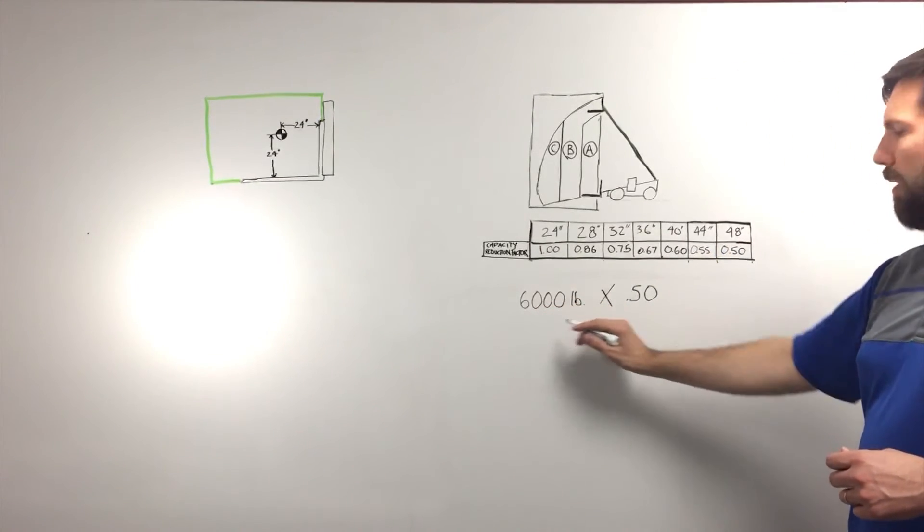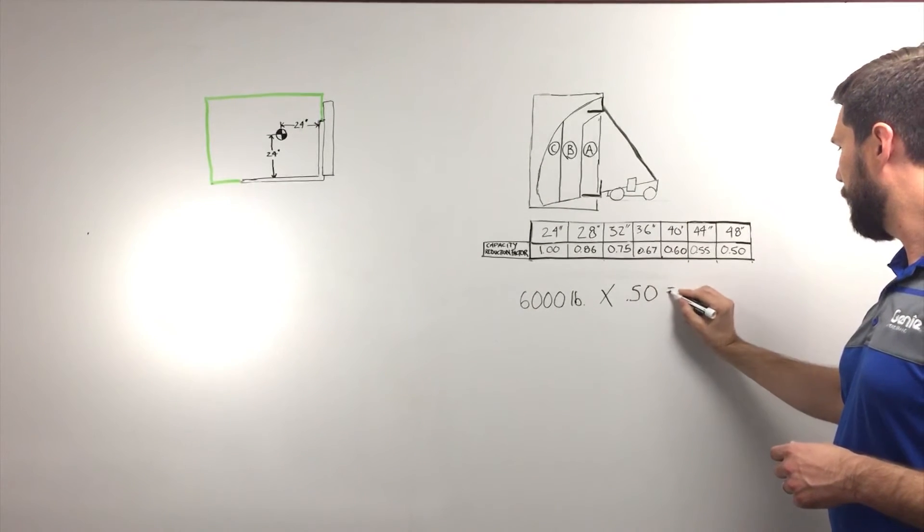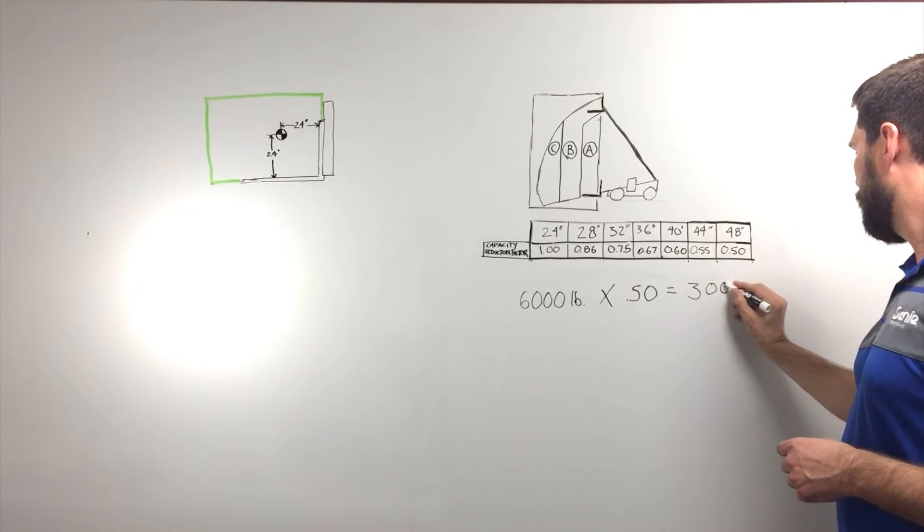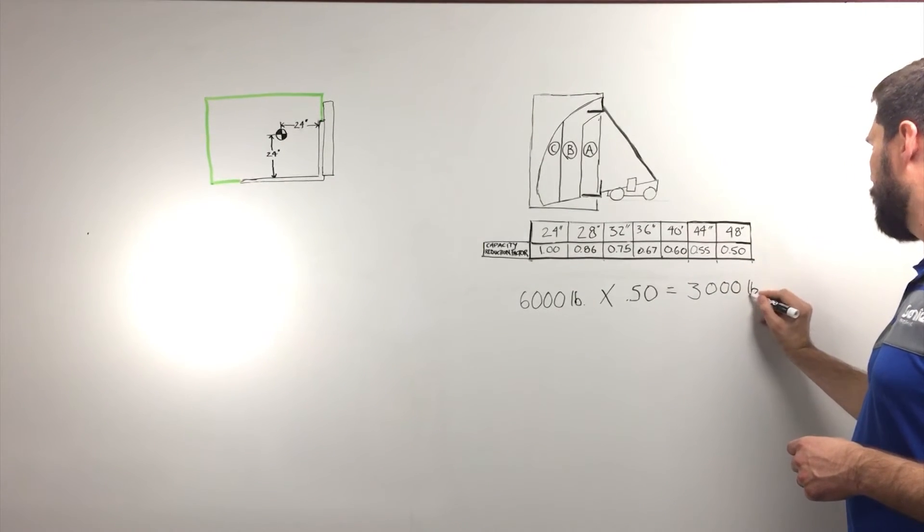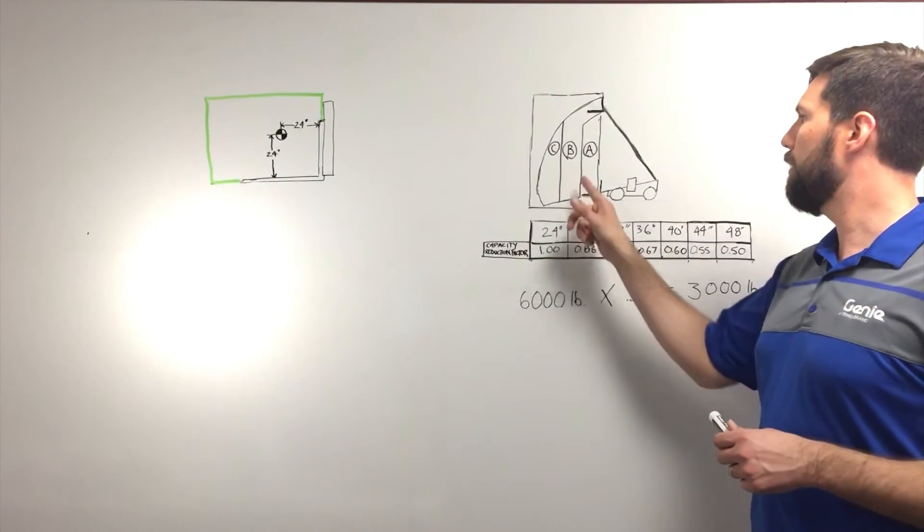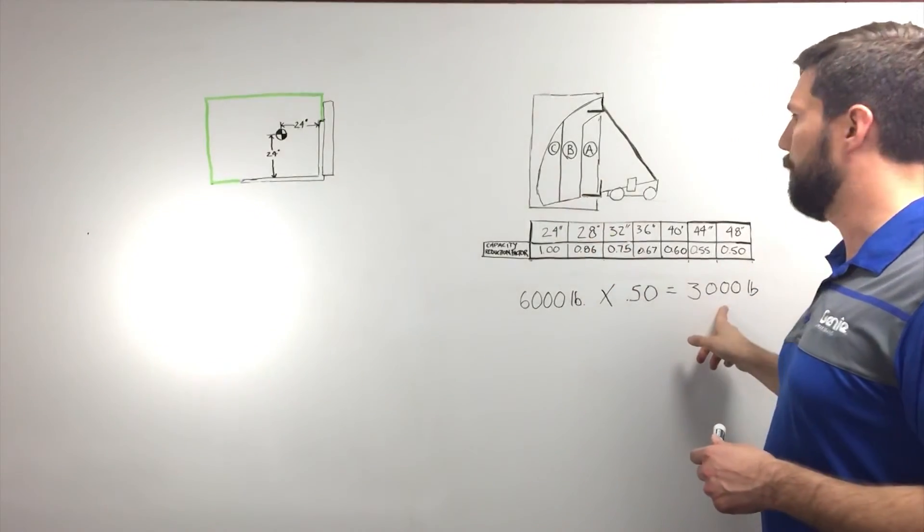So 6,000 pounds times 0.50 equals 3,000 pounds. So I know that the new capacity in zone B for a load center of 48 inches is 3,000 pounds.